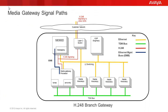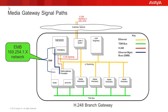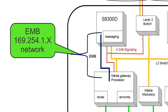Before the actual demonstration, I would like to illustrate what the EMB is and where it is in the gateway architecture. The illustration of the branch gateway architecture takes a bit of poetic license with the real method of how the EMB functions. The EMB in reality is part of the layer 2 switching shown in yellow. The logical connection, however, between the S8300D media server and the media gateway processor is illustrated by the blue line connecting the two functional components using the layer 3 169.254 address noted earlier.